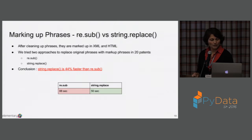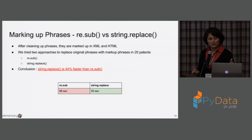For marking up phrases — after we clean them up, we want to mark them up in XML or HTML. We tried regular expression versus string, and found that string is 44% faster. These are results for 20 patents, and we expect they'll scale hugely for hundreds of thousands of patents.